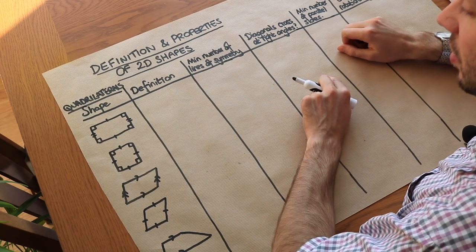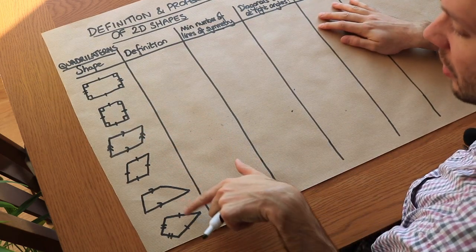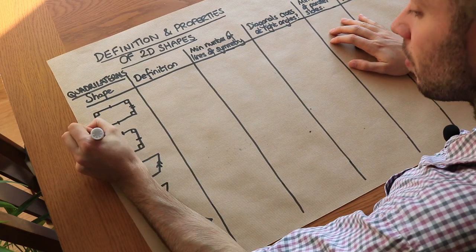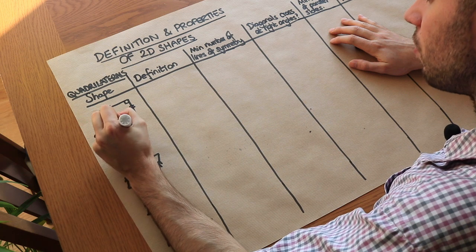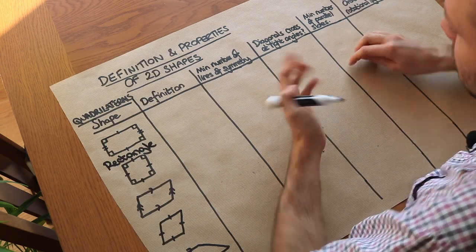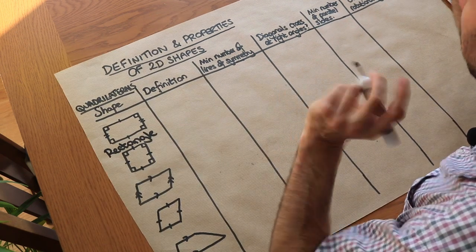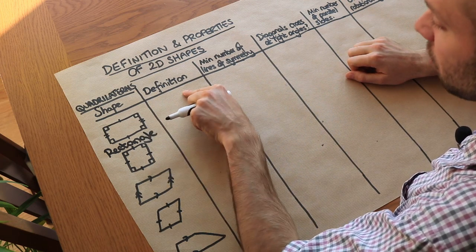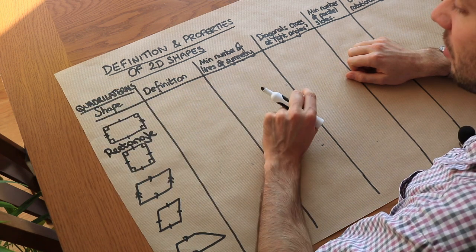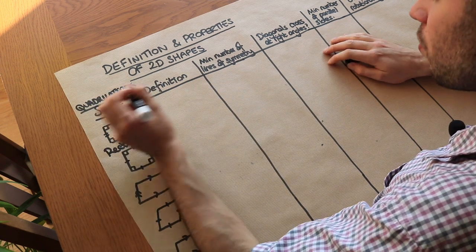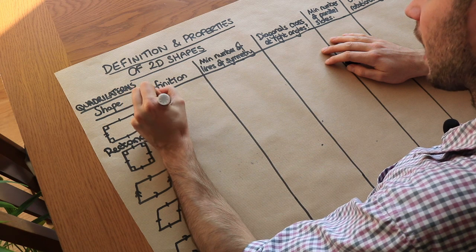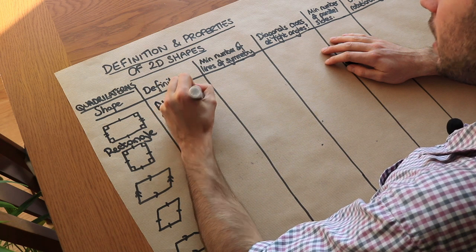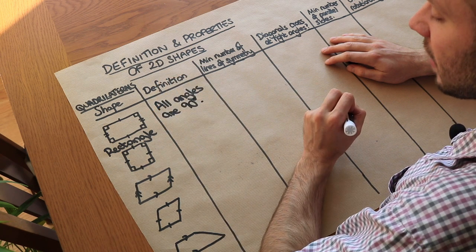Now let's look at the properties of different quadrilaterals. First, the rectangle. You probably recognize it, but the exact definition is: it's a quadrilateral where all the angles are equal — and they will all be 90 degrees.